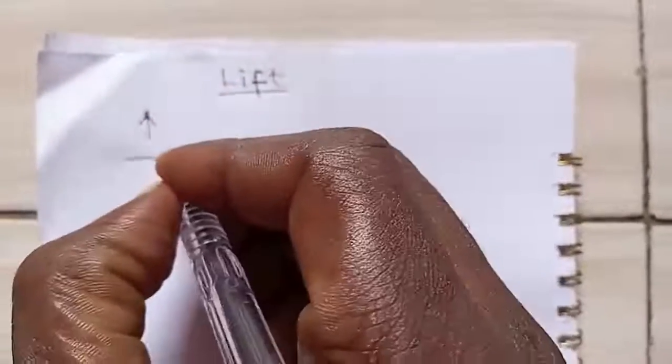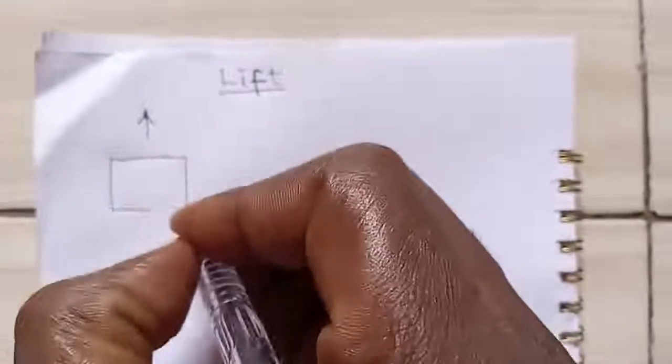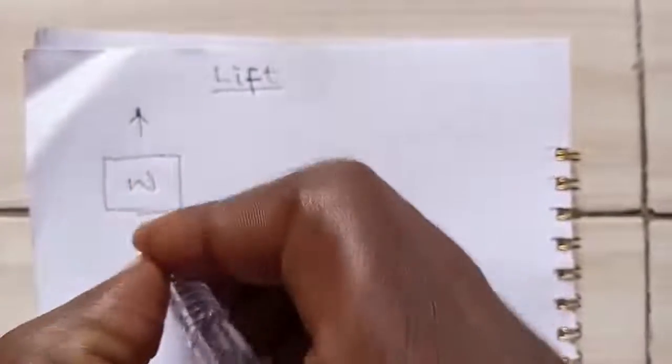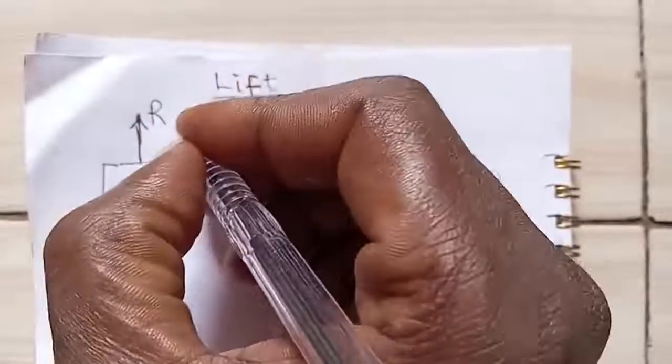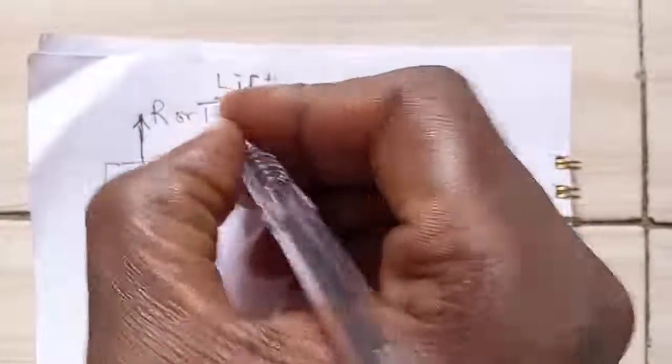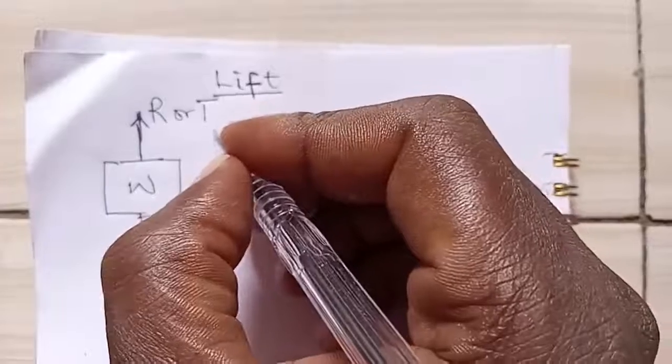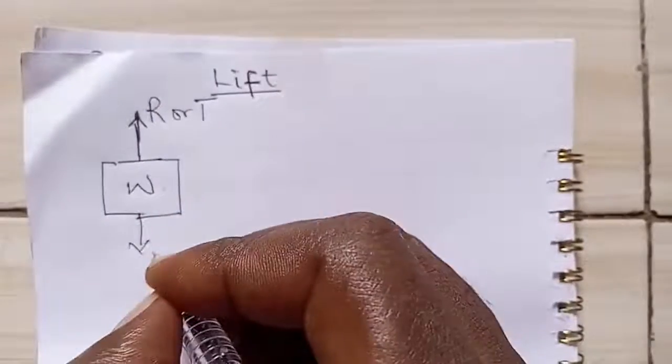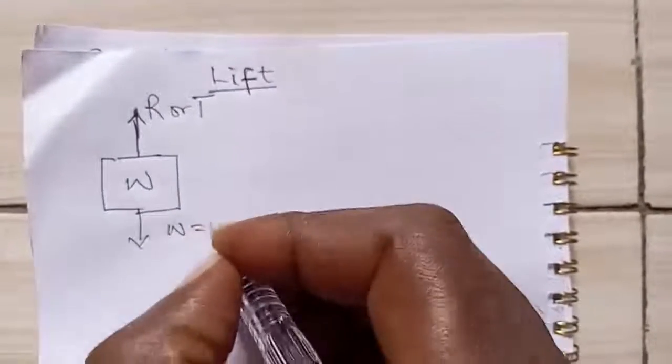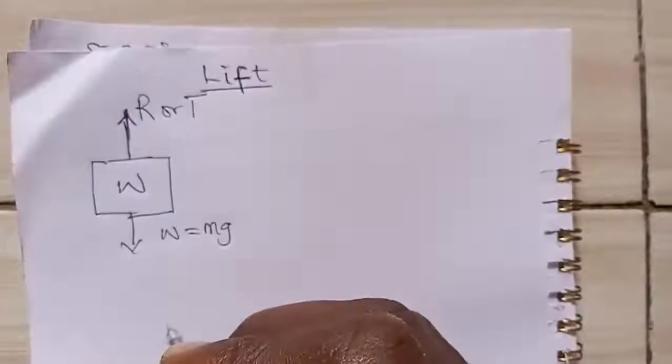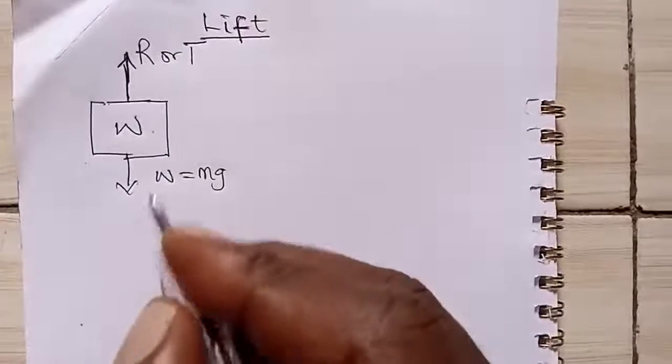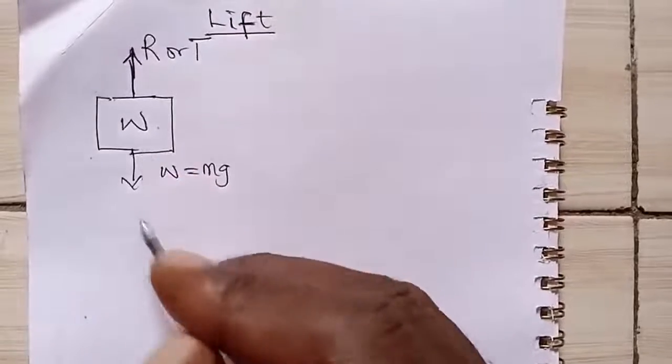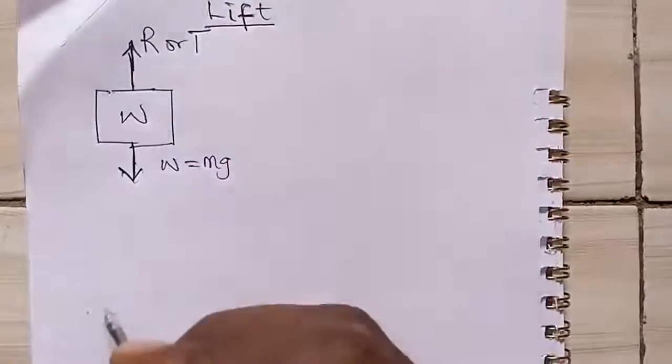If for example we have a lift this way, weight is what brings it down. Reaction or tension T is what takes it up. So this is pulling it up, this is bringing it down and W is giving us mg. Now if we consider this, there are some conditions that makes lift to be possible and there are some things we need to consider.